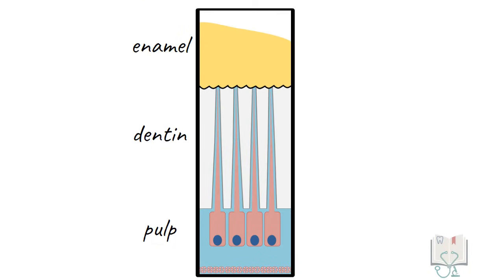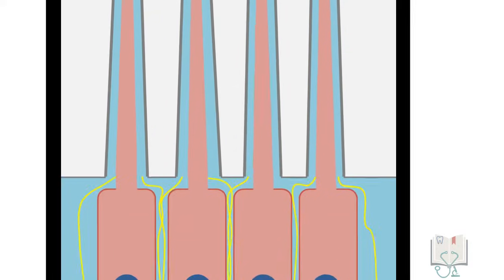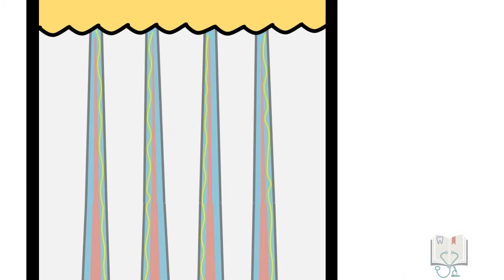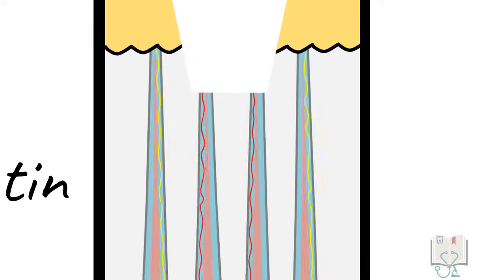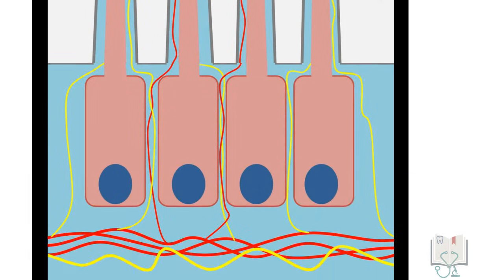This theory stated that pulpal nerves from the plexus of Raschkow in the cell-free zone enter the dentinal tubules and cover the full length of dentinal tubule till the dentinoenamel junction. So when dentin gets exposed, these nerves get mechanically stimulated and hence cause pain sensation.